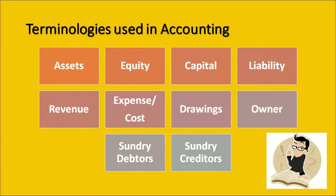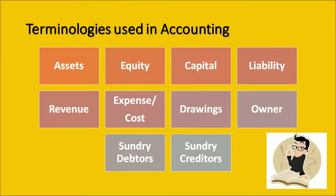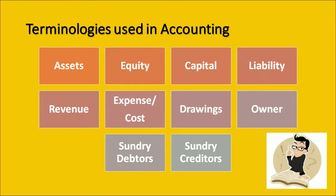Revenue is the total monetary value of goods and services delivered by the organization. Expenses or cost is the expenditure incurred in the various processes of selling products and services. Drawings refers to borrowing by the owner for personal use. The owner is the one who bears the risk of running the organization. Sundry debtors are those who owe the business some funds, and sundry creditors are those to whom you owe something because of goods or services purchased from them.